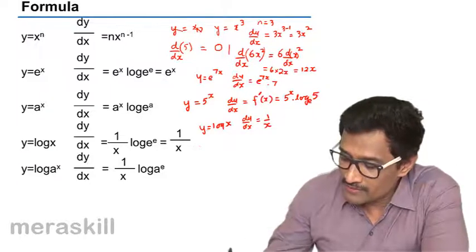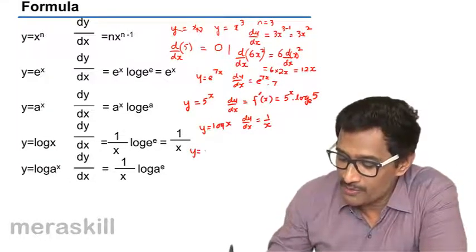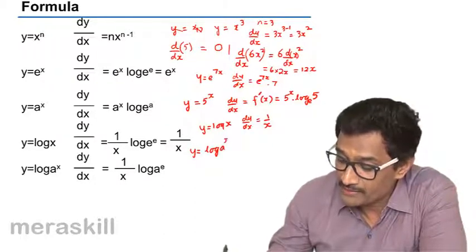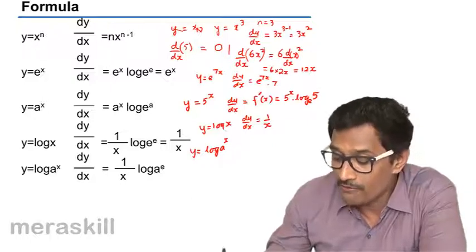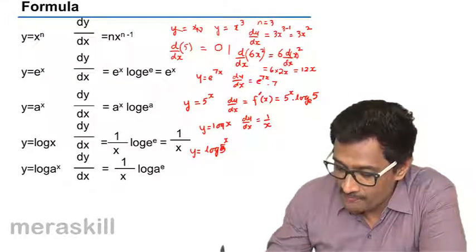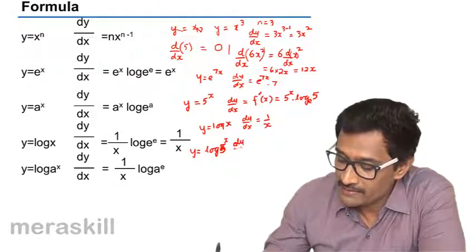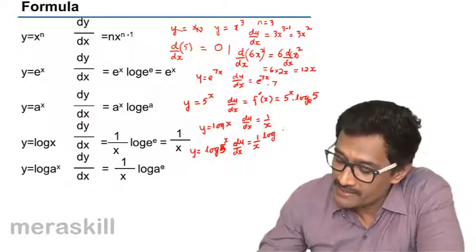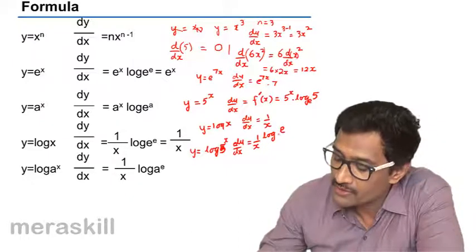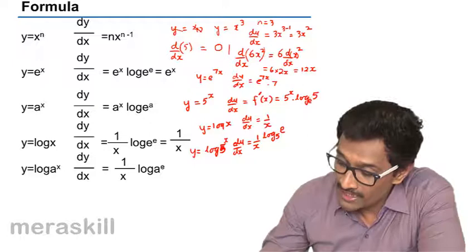Coming to the last one which is a combination of these two. So we have suppose y equals log(a^x). So here you have a^x and here you have log of a^x. So in that case, dy/dx would be given as 1 by x. And it won't be log a to the base e. It will be log e to the base a.